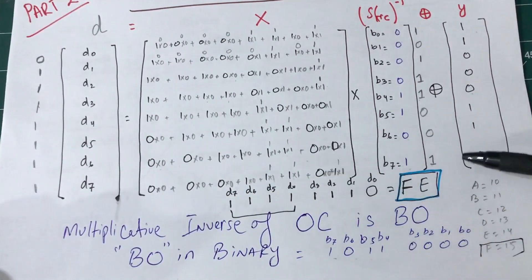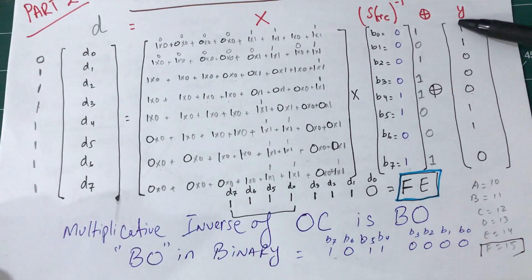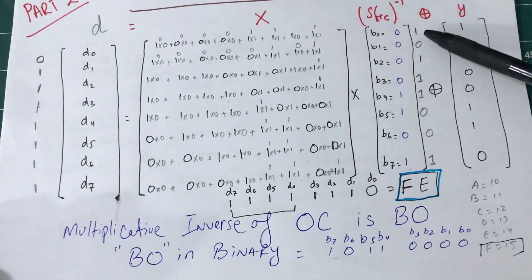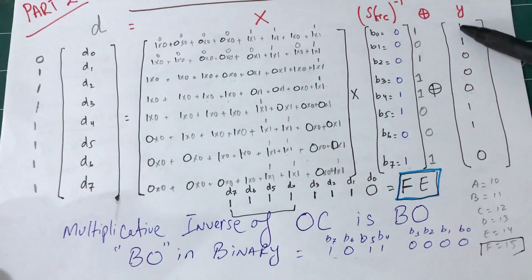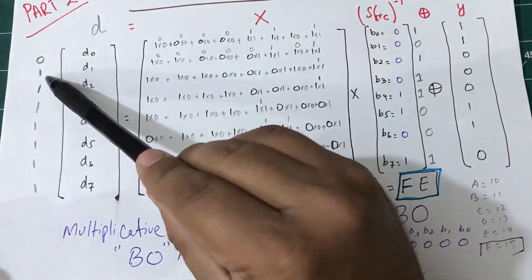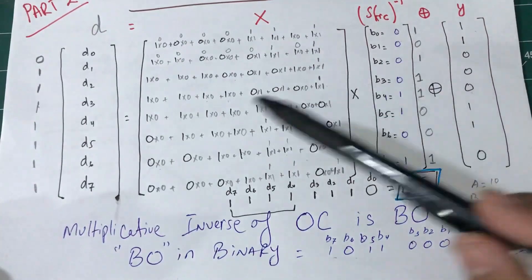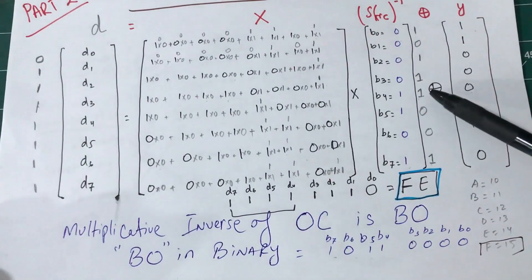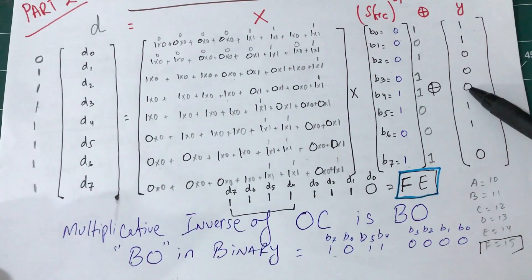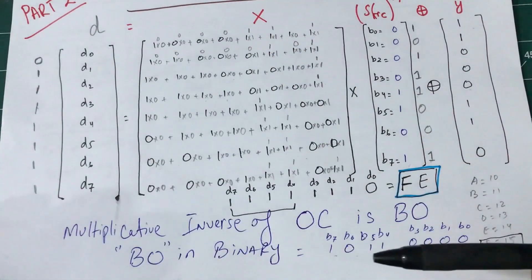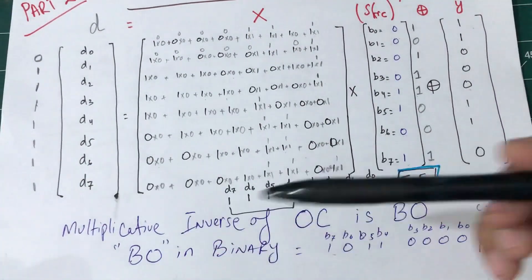Continuing through the remaining entries the same way: 1 plus 1 mod 2 is 0; 0 plus 1 mod 2 is 1; 1 plus 0 mod 2 is 1; 1 plus 0 mod 2 is 1; 1 plus 1 mod 2 is 1. This is how we obtain all these values, and then we write them down in the result vector.